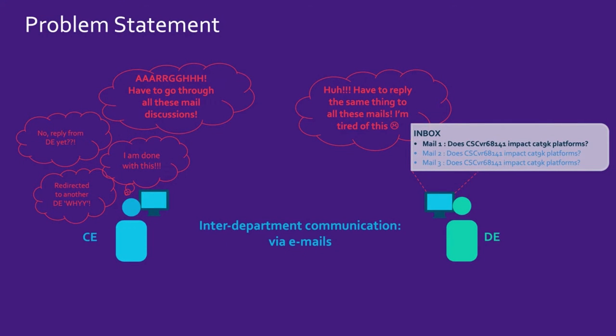As a consulting engineer, I have to go through all these email discussions, which takes a lot of time. If I don't get an answer, I write a new email to the developer asking for more details. There might be no reply — the developer could be busy. Even if they do reply, it might get redirected to another developer or another team. So redirection is another problem in these email communications.